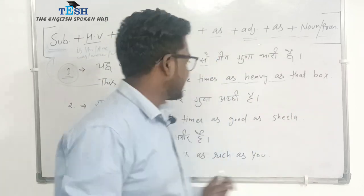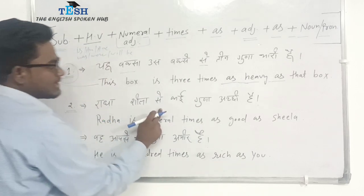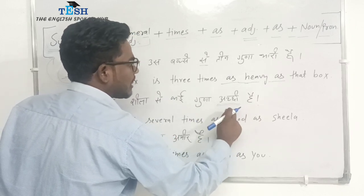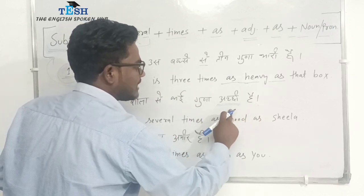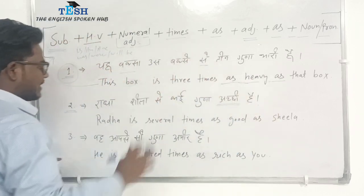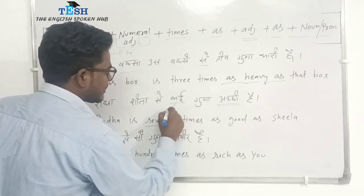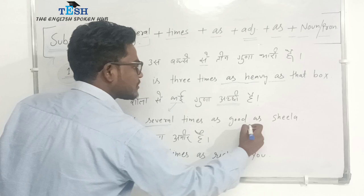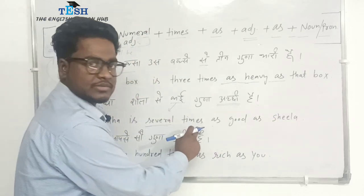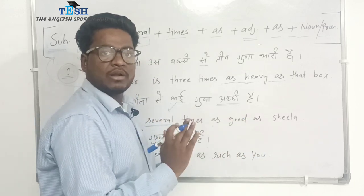Second example: राधा सीला से कई गुना अच्छी है — Radha is several times as good as Seela. You can use any adjective here — good, short, small, whatever applies. When we say 'several' (कई), we use 'several times'. So the sentence is: Radha is several times as good as Seela.